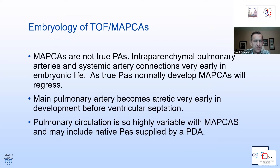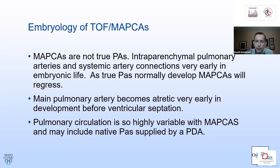The embryology of this disease: MAPCAs are not true pulmonary arteries. They are intraparenchymal pulmonary vessels that have systemic artery connections. This occurs very early in embryonic life and is true of all fetuses. As the true pulmonary arteries develop and have continuity to the right ventricle, these MAPCAs will normally regress. The error in this process occurs when the main pulmonary artery does not connect — this happens very early, even before septation. The combination of VSD, absence of the main pulmonary artery, and MAPCAs is the primary problem.